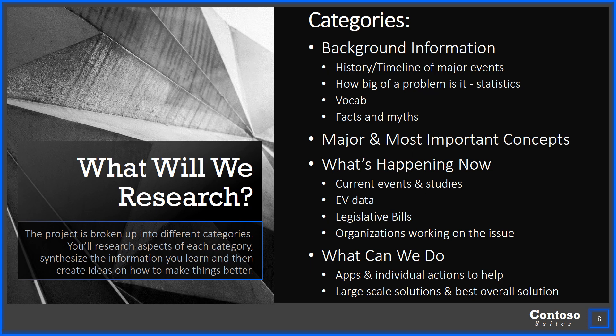The next category is what's happening now. This includes current events and studies, the Eastview data you get by surveying your classmates, and what legislative bills are out there right now related to your topic — maybe one or two bills, four or five studies. And then who's out there currently working on the issue? If it's such a big deal and affects so many people, who's out there trying to do something about it?